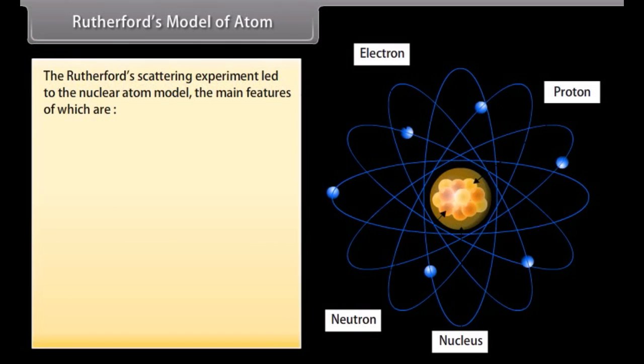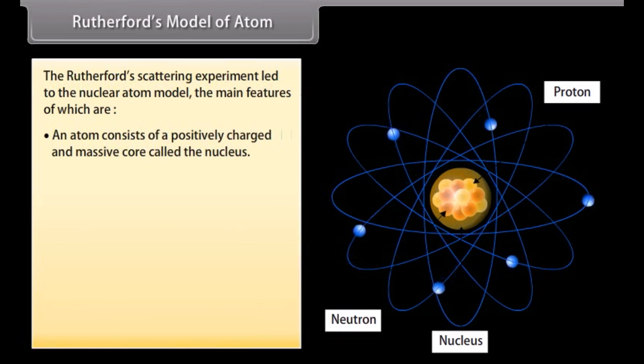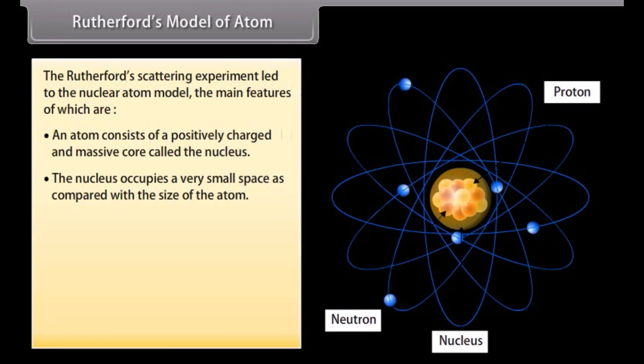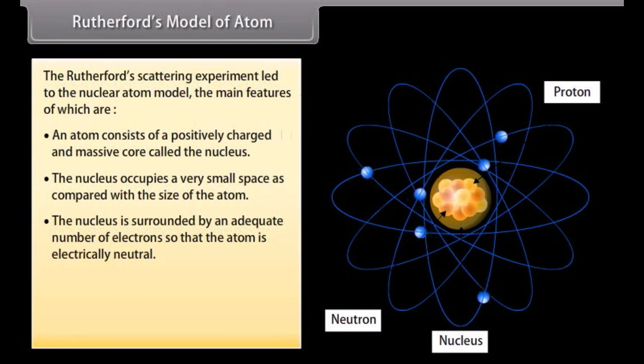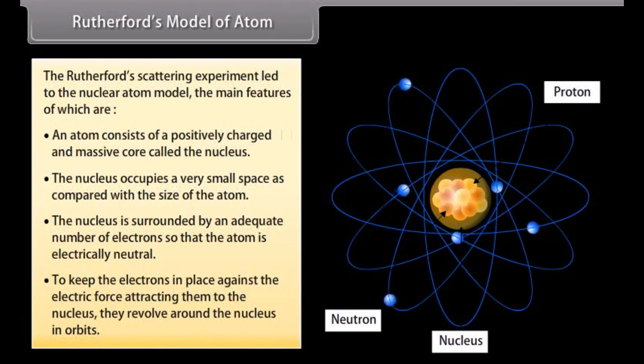Rutherford's model of atom. The Rutherford scattering experiment led to the nuclear atom model. The main features of which are: An atom consists of a positively charged and massive core called the nucleus. The nucleus occupies a very small space as compared with the size of the atom. The nucleus is surrounded by an adequate number of electrons so that the atom is electrically neutral. To keep the electrons in place against the electric force attracting them to the nucleus, they revolve around the nucleus in orbits.